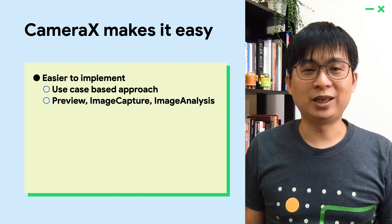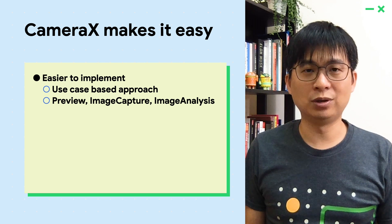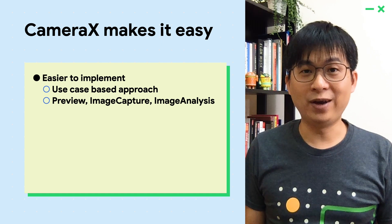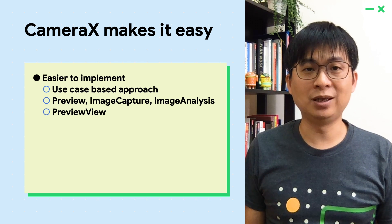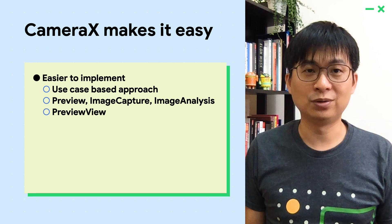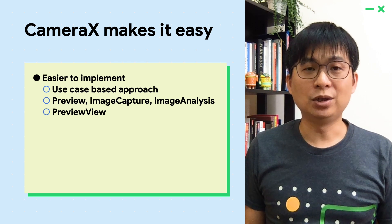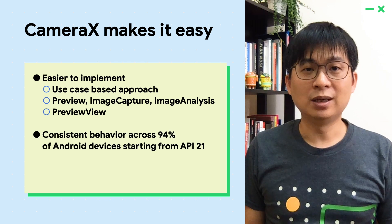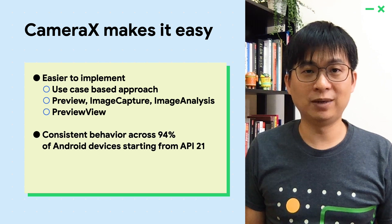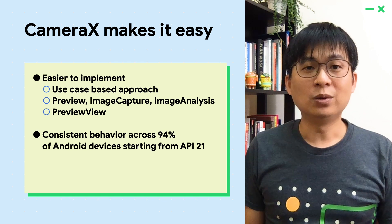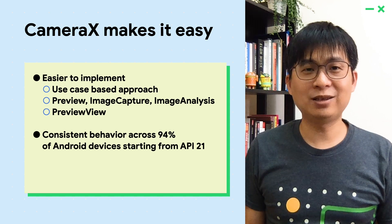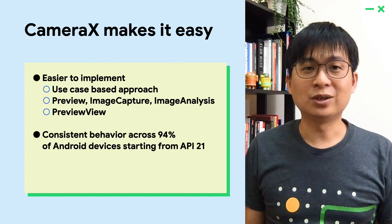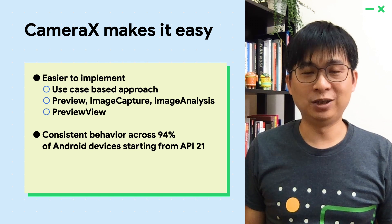Preview is for displaying camera preview. Image capture is for high-quality still image capture. Image analysis is for frame buffer access for analysis like object detection. And we have PreviewView to handle the complexity of the preview transform for you. Second, KMAS ensures applications have a consistent experience across 94% of Android devices starting from API 21. We handle KMAS 2 API-specific, Android version-specific, and device-specific fixes under the hood, so developers get a seamless experience regardless of the device.